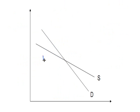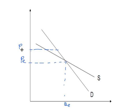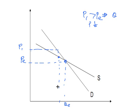Here we see the supply curve cutting the demand curve from below. We have an equilibrium price and an equilibrium quantity. Now suppose the price is greater than the equilibrium — what happens? To achieve equilibrium the price would have to decrease, but let's examine whether that actually brings us back to equilibrium in this configuration.